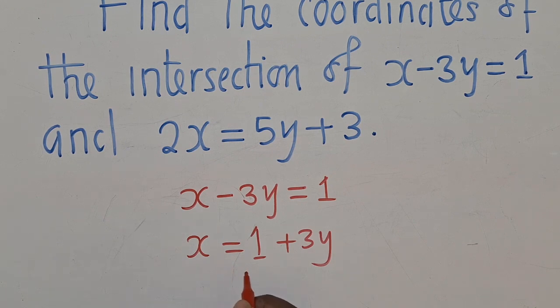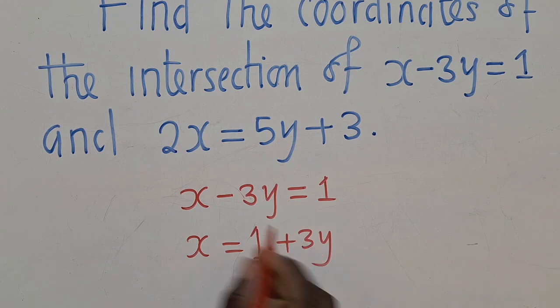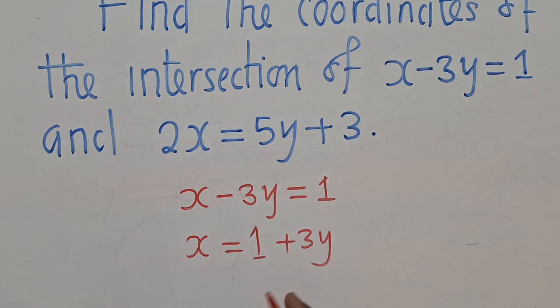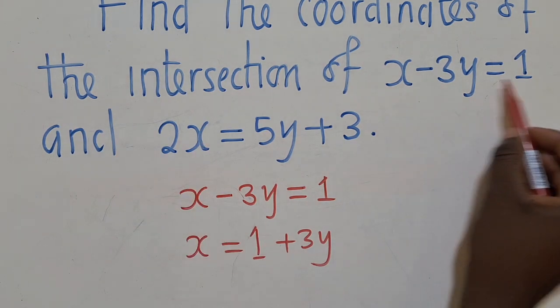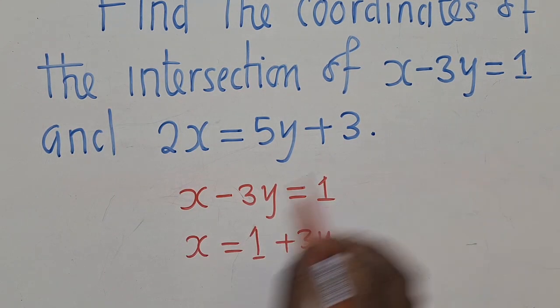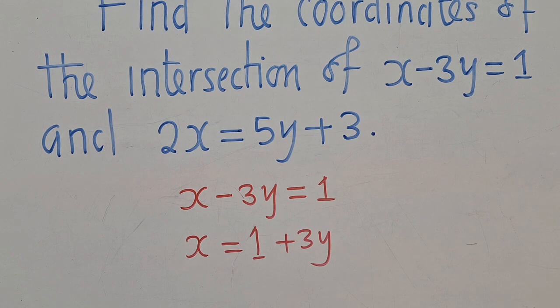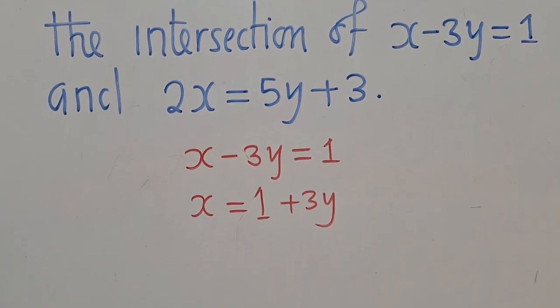Thereafter, we shall get the value of x, which is 1 plus 3y. We substitute it in the other line or other equation. You can see we have got two equations. We've got this one, made x subject of the formula. Since we've gotten the value of x here, we shall substitute it in the other equation. And this is how it will look like.